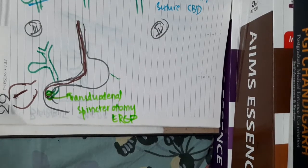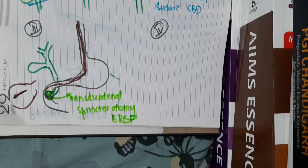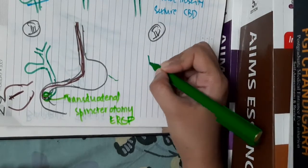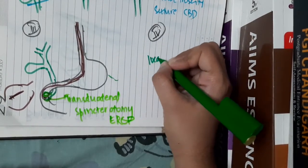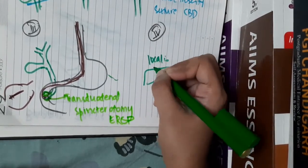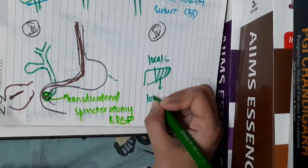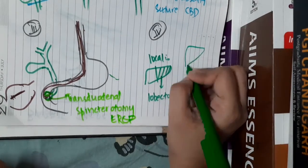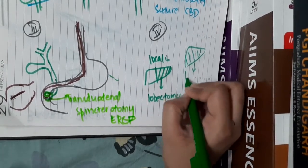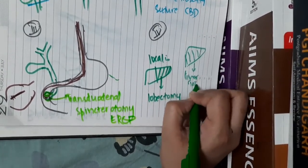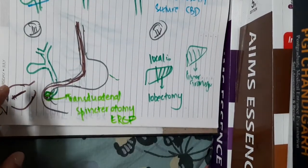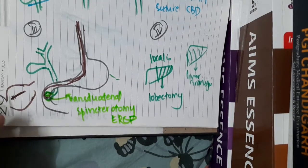In Type 4, which involves both intrahepatic and extrahepatic dilatation, treatment depends on extent: if the disease is localized to one lobe, lobectomy is performed; if it involves the whole liver, liver transplantation is required.